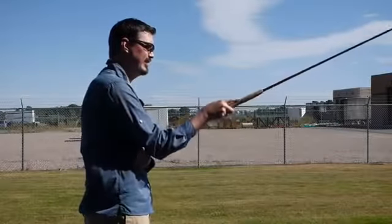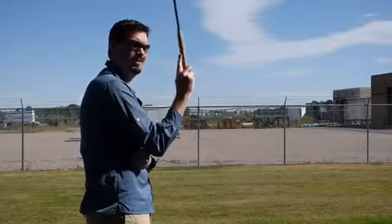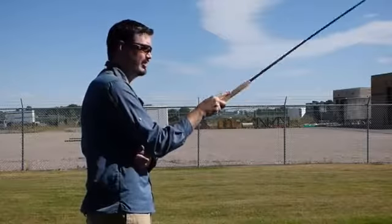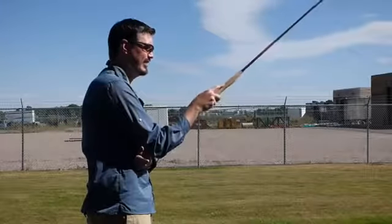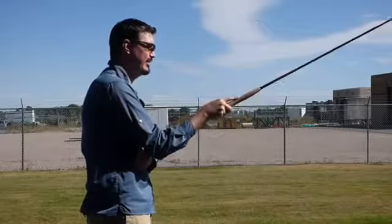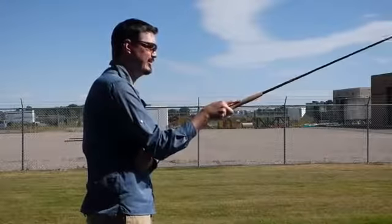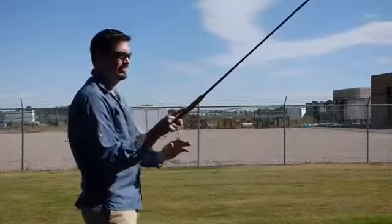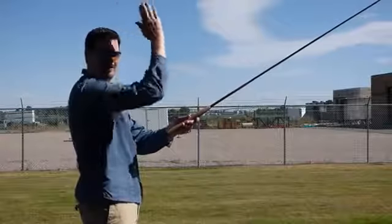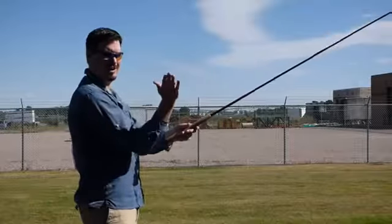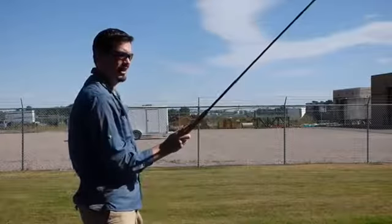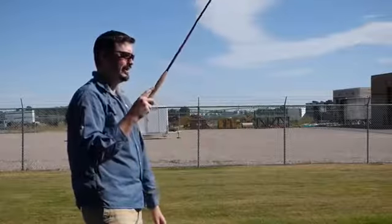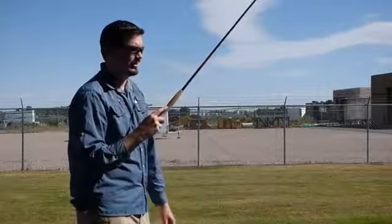That stop on the up allows your line to load. Then you want to have some energy on that cast as well. Up, stop, down stop. Usually when someone's learning, I tell them instead of having the tenkara rod straight up and down, I angle it just a little bit to the side. That way your fly doesn't hit your tenkara rod until you get really used to the casting.